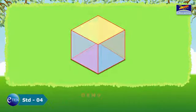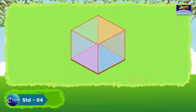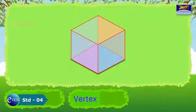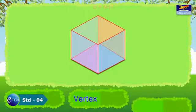A cube has many aspects. It has faces. It has corners, which is called a vertex. And where two faces meet each other, they are called edges.